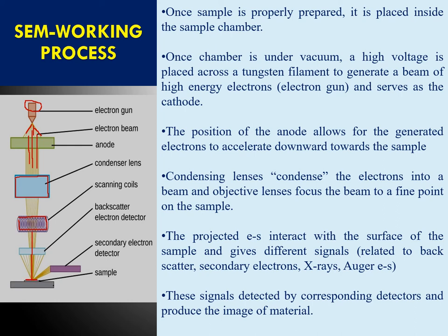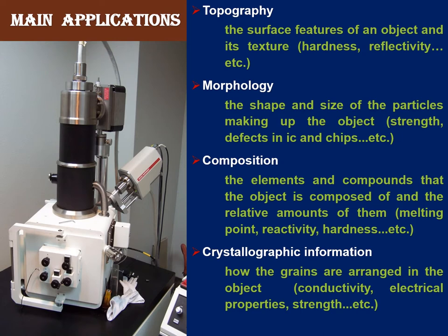Finally, this electron beam is directed onto the sample surface. The sample interacts with the electrons — some of the electrons are ejected back, which is called backscattering. These backscattered electrons are detected by the backscatter electron detector. Some electrons interact with the atoms present in the surface and emit secondary electrons. These secondary electrons are detected by the secondary electron detector. These detectors give the final information about the surface morphology of the material.